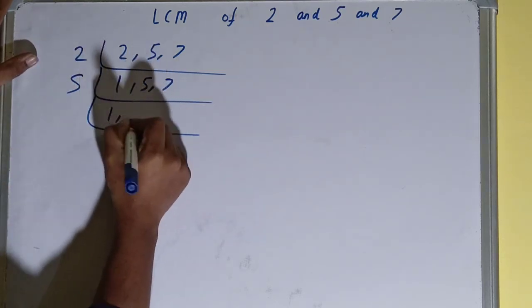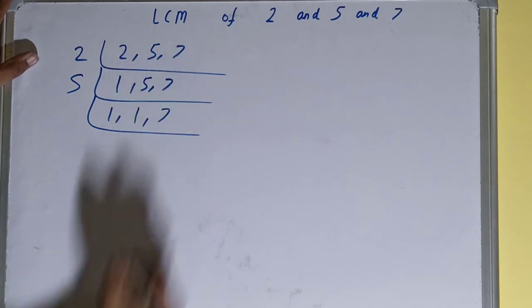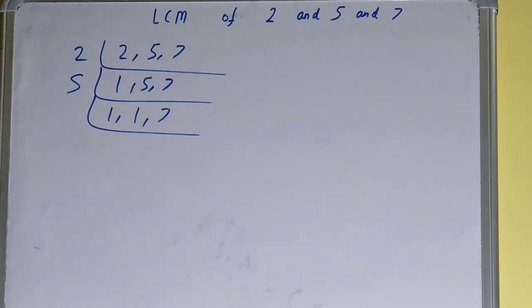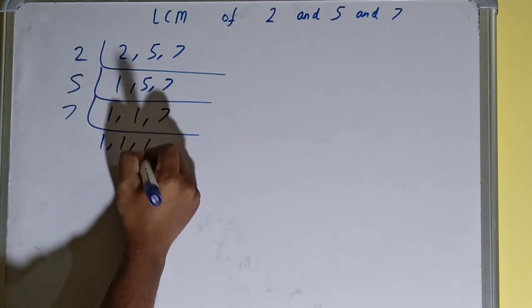This 1 will remain the same. This 5 divided by 5, we'll be getting 1. This 7 will remain the same. Again, is any of the numbers divisible by 5? None of them are, so we'll go to the next lowest one, which is 7. And this 7 is divisible by 7, so we'll be getting 1, 1, 1.